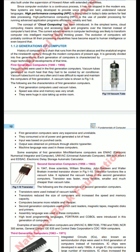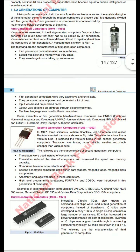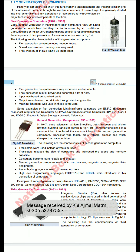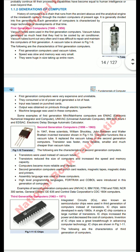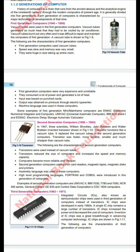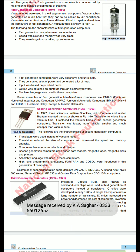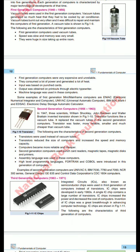The characteristics of the first generation: vacuum tubes were used, speed was slow and memory was very small, and they were very huge in size, taking up an entire room. The first generation computers were very expensive and unreliable. They consumed a lot of power and generated a lot of heat, which could cause the vacuum tube to fail and the entire system to stop. Input was based on punch cards. Output was obtained on printout through an electric typewriter attached to the computer.